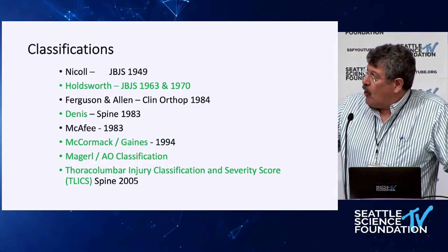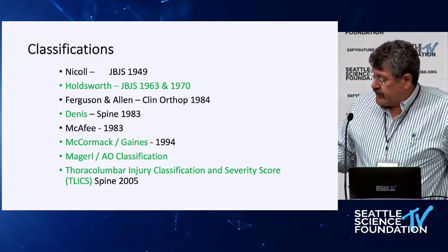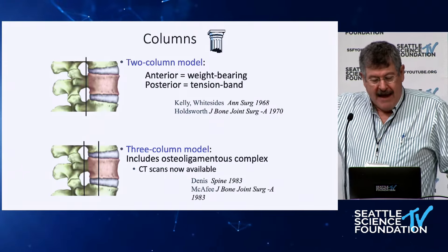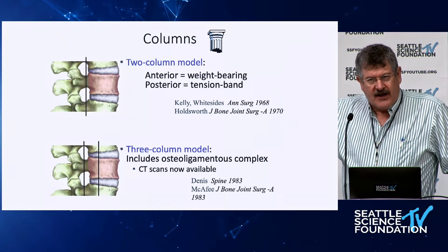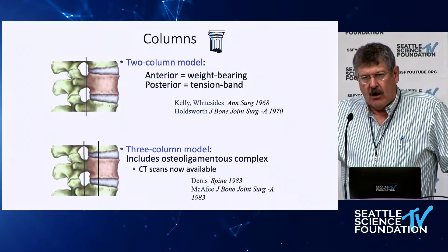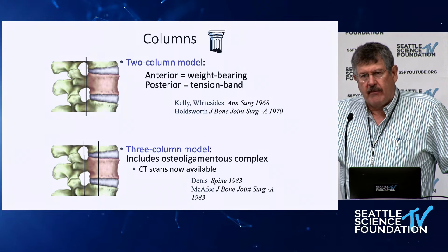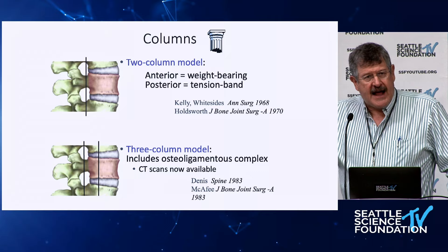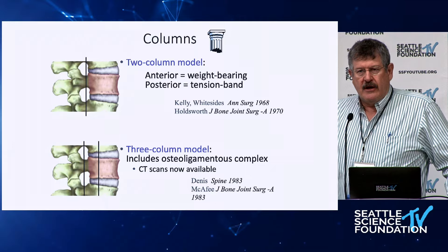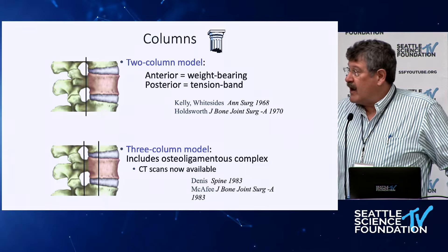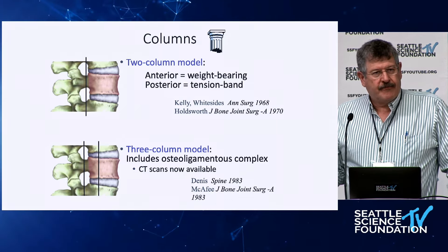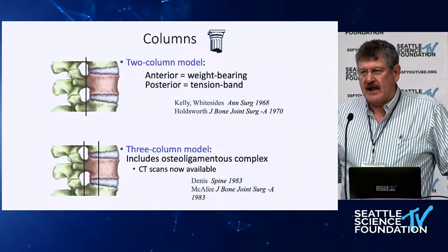There have been a whole bunch of classifications over the years; I'm going to touch on just a few. Going back to when we used just X-rays and tomograms, we talked about two columns: an anterior column — the vertebral bodies that resisted axial load — and a posterior tension band that resisted flexion. What I find interesting is that for the most part we've come back to that. That was one of the original classifications.